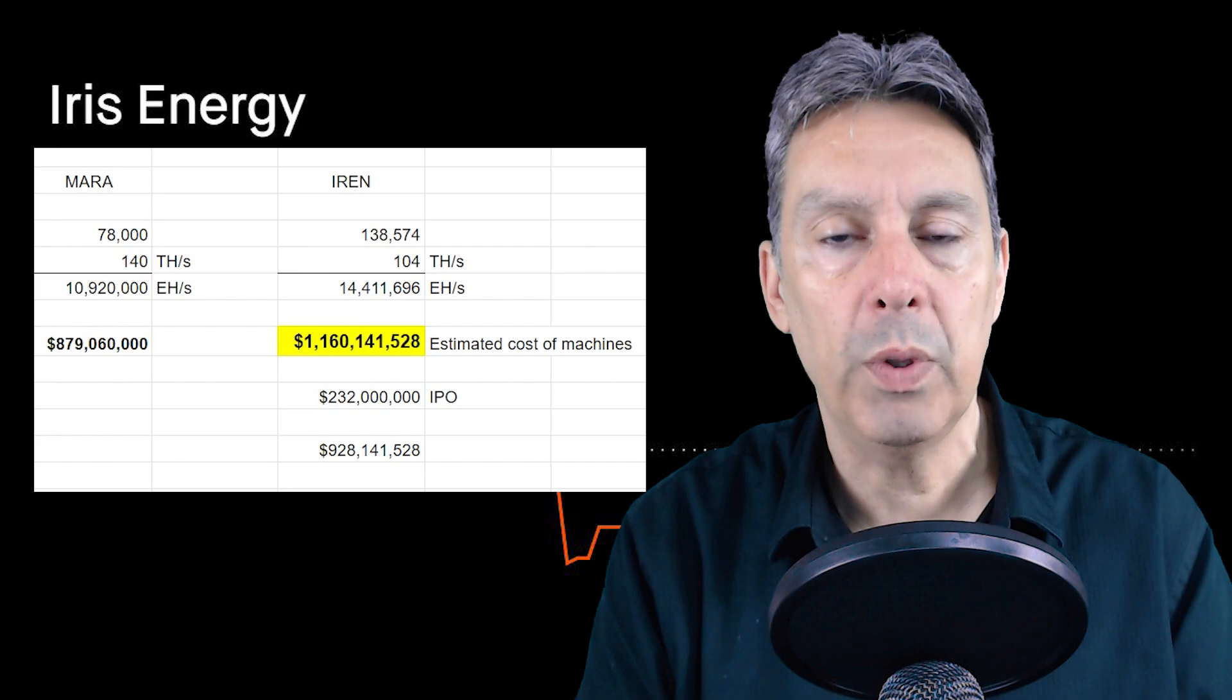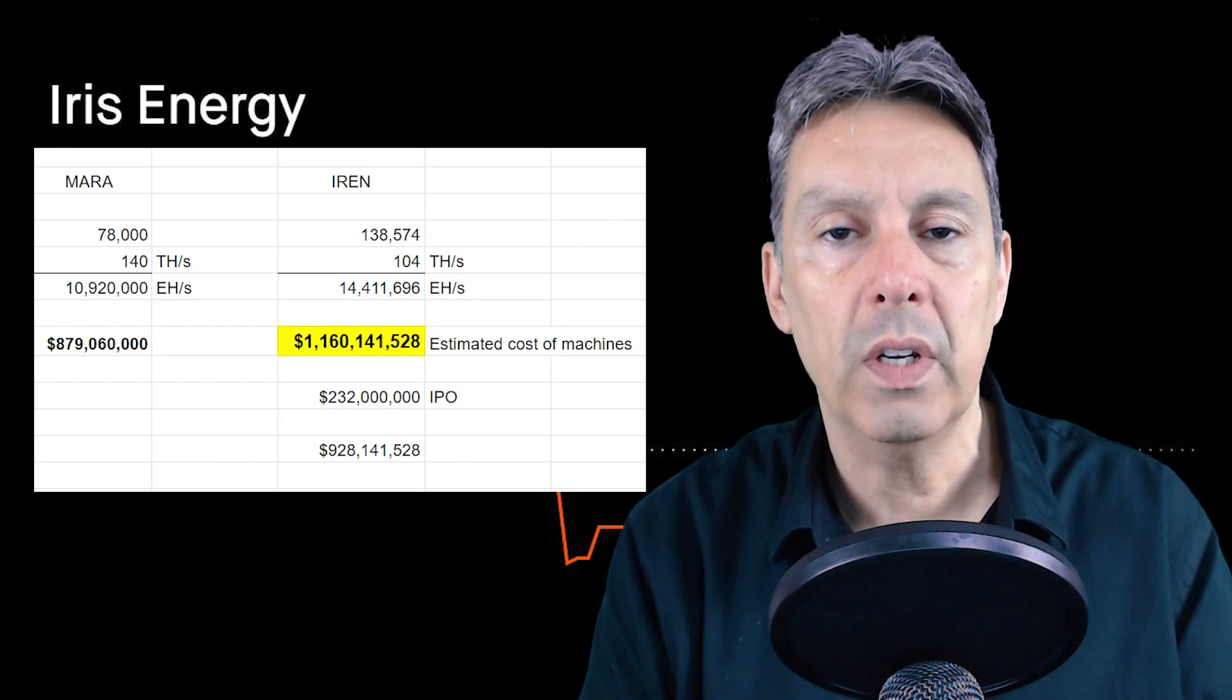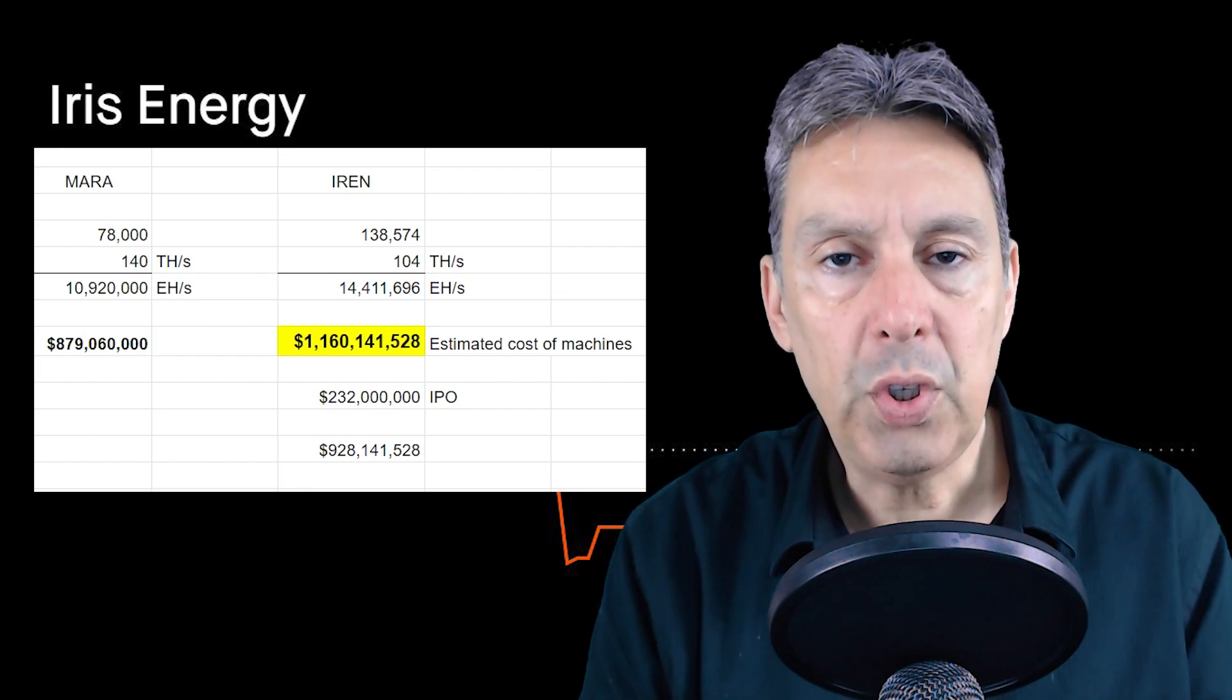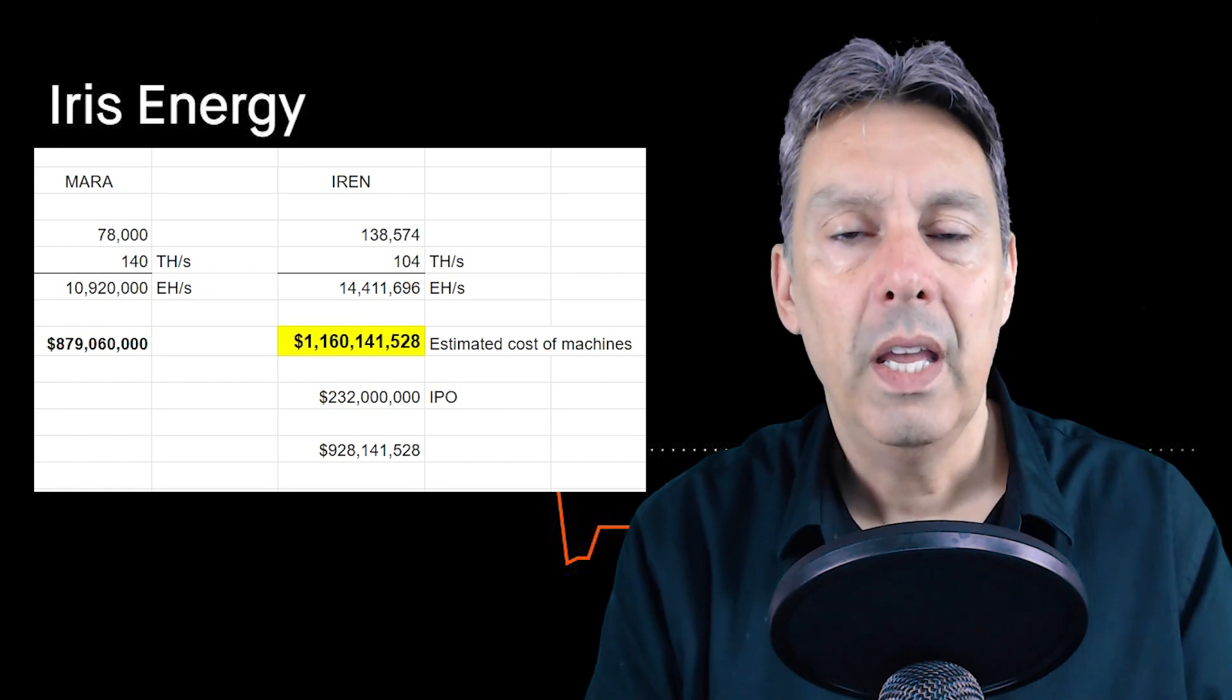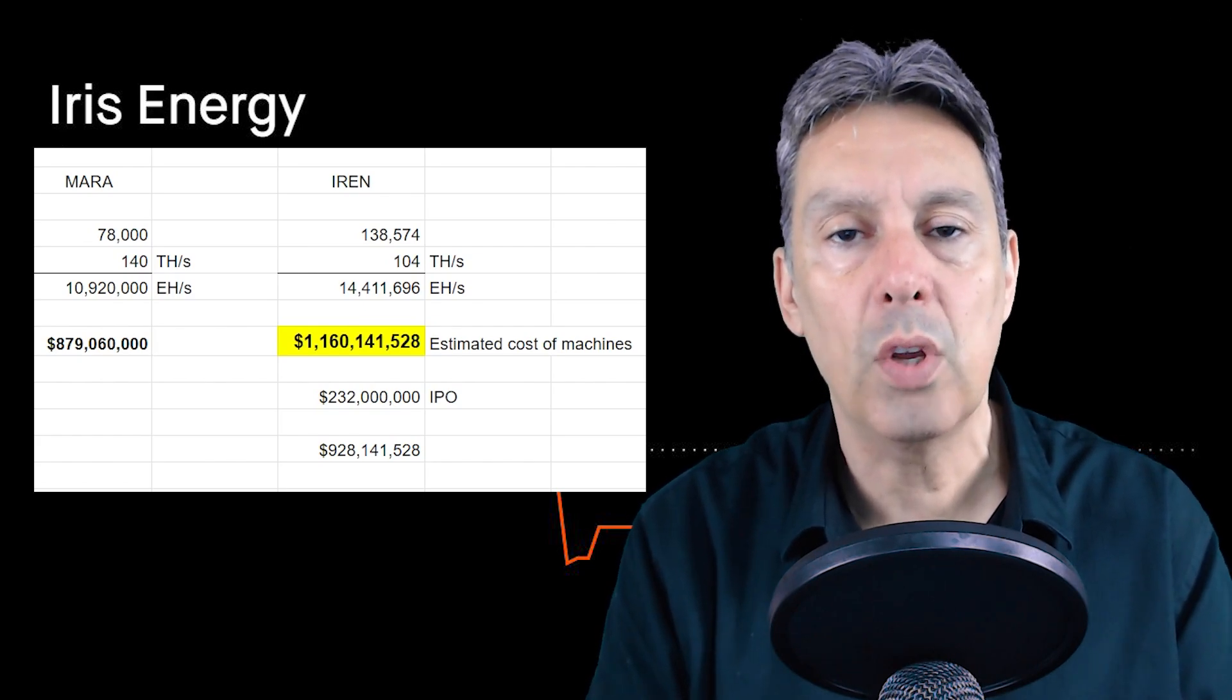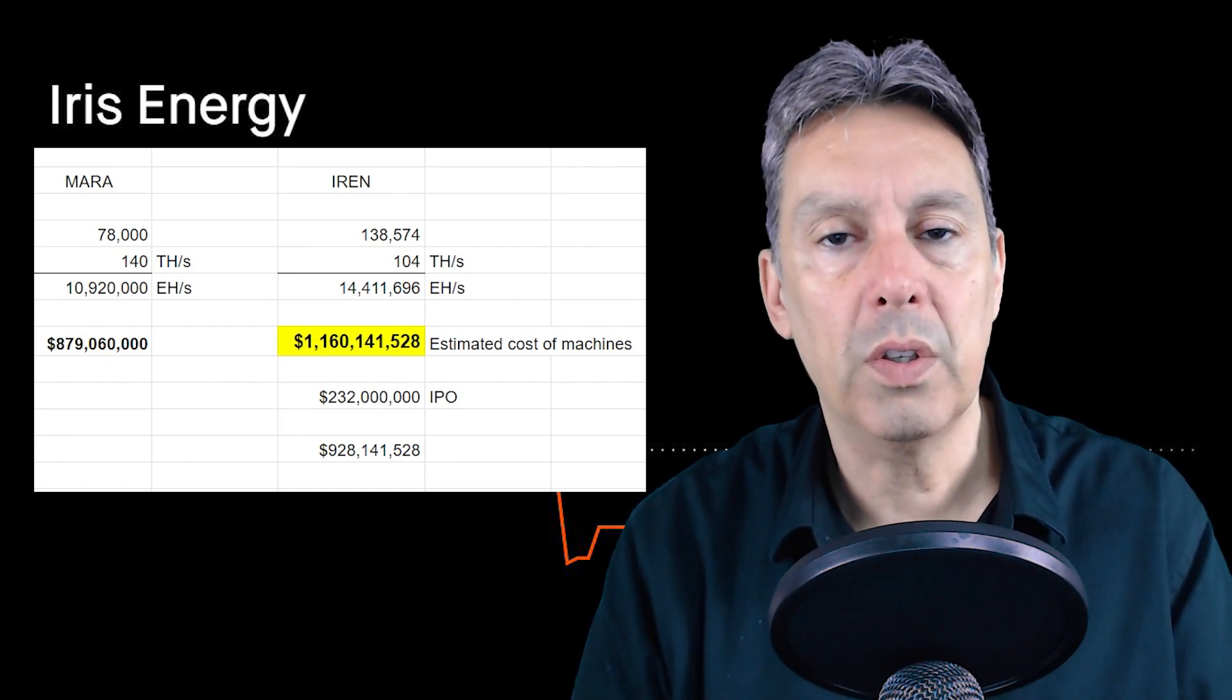The dilution to an investor is going to be so dramatic at that rate that it's not really feasible. So what they need to do: they need to get machines installed, they need to double or triple their capacity and double or triple their market cap, and then start to raise money and then raise money over time. As their market cap increases, the amount of money that they raise is less and less dilutive to the shares of stock.